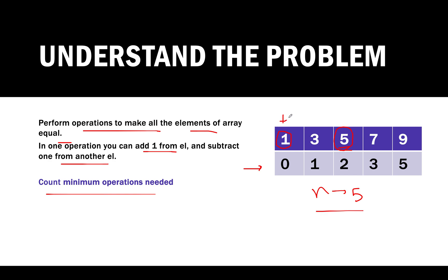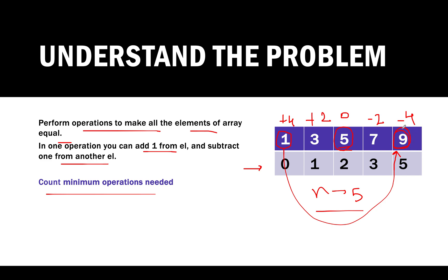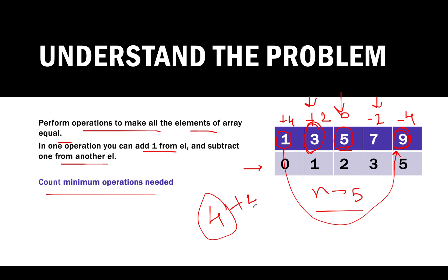To make element 1 equal to 5, you need to add 4. To make 3 equal to 5, you add 2. Element 5 is already 5, so 0. For 7 you subtract 2, and for 9 you subtract 4. You can see pairs forming. In the first operation, choose the two extreme elements and perform the operation 4 times — operation count becomes 4. Then move pointers inward: 2 more operations are needed. Total answer becomes 6.